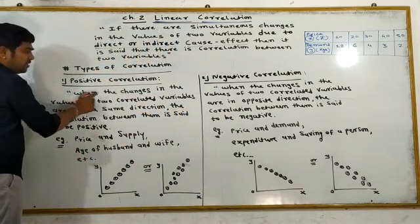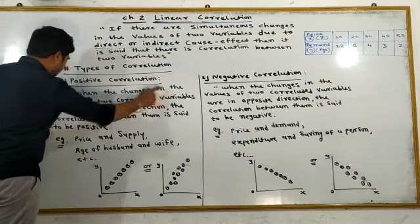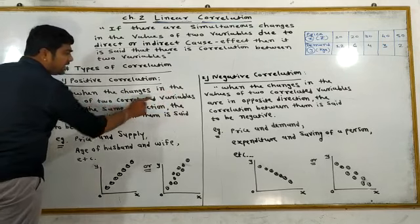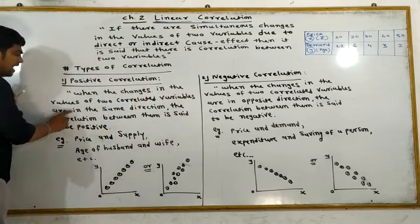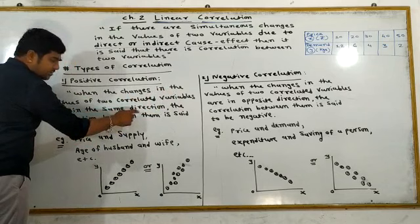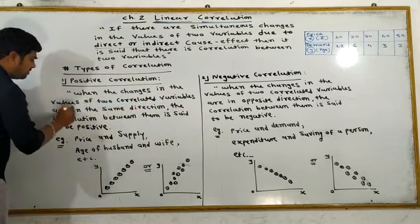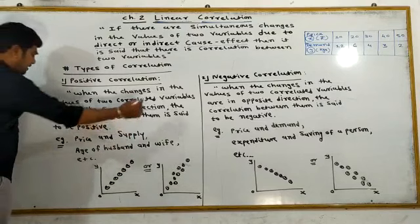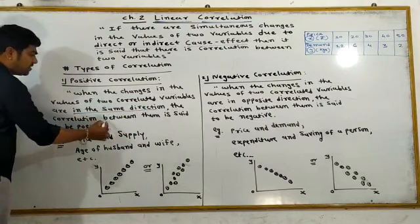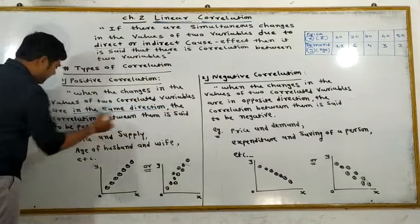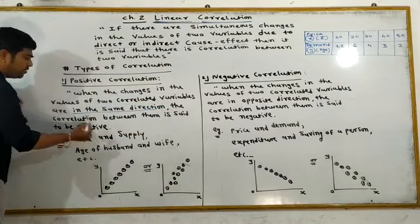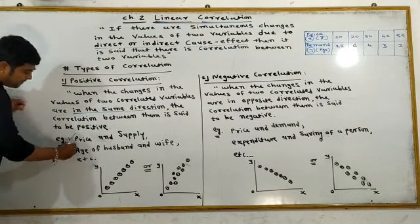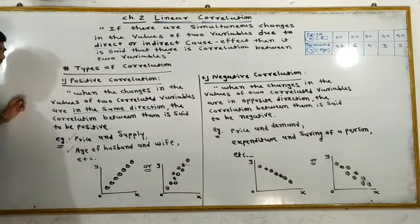Positive correlation: where the changes in the values of two related variables are in the same direction. When same direction change is local, the correlation between them is said to be positive. For example, price and supply — as husband and wife.